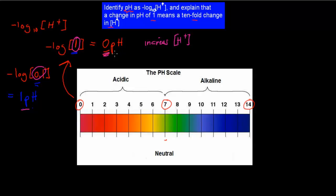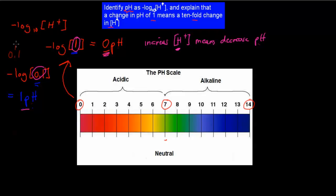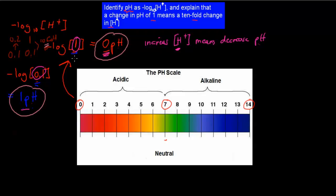An increase in the hydrogen concentration means a decrease in the pH. The more hydrogen ions we have in our solution, the lower the pH. We went from 0.1 to 1 in terms of concentration of hydrogen ions — that's a tenfold difference. So a tenfold difference in concentration equals a 1 pH difference; every 1 pH unit corresponds to a tenfold difference in hydrogen concentration.